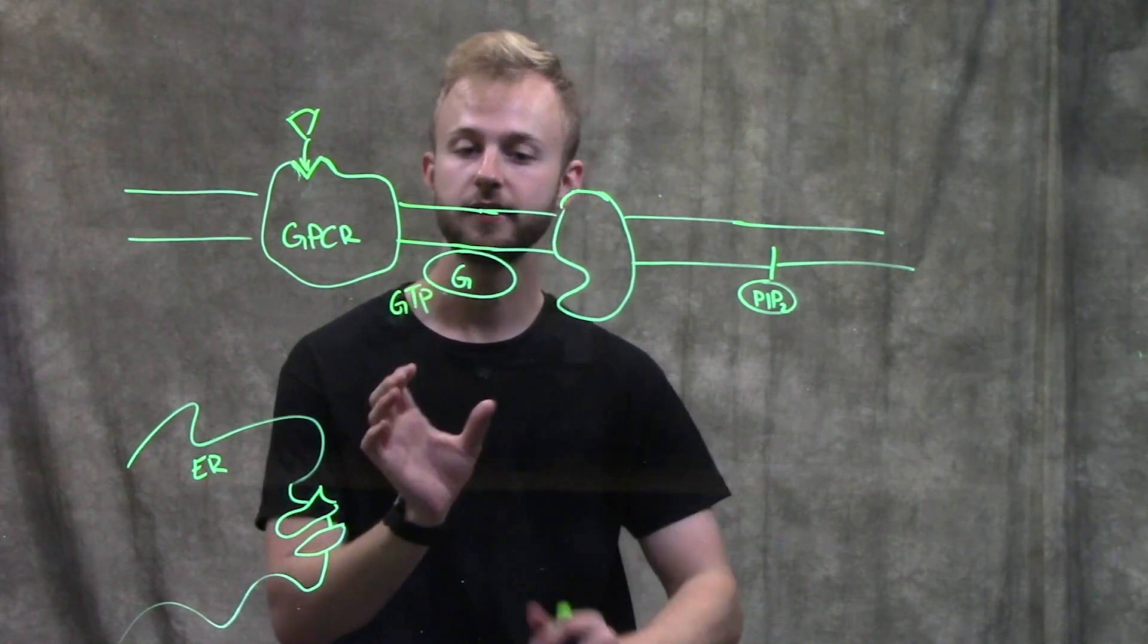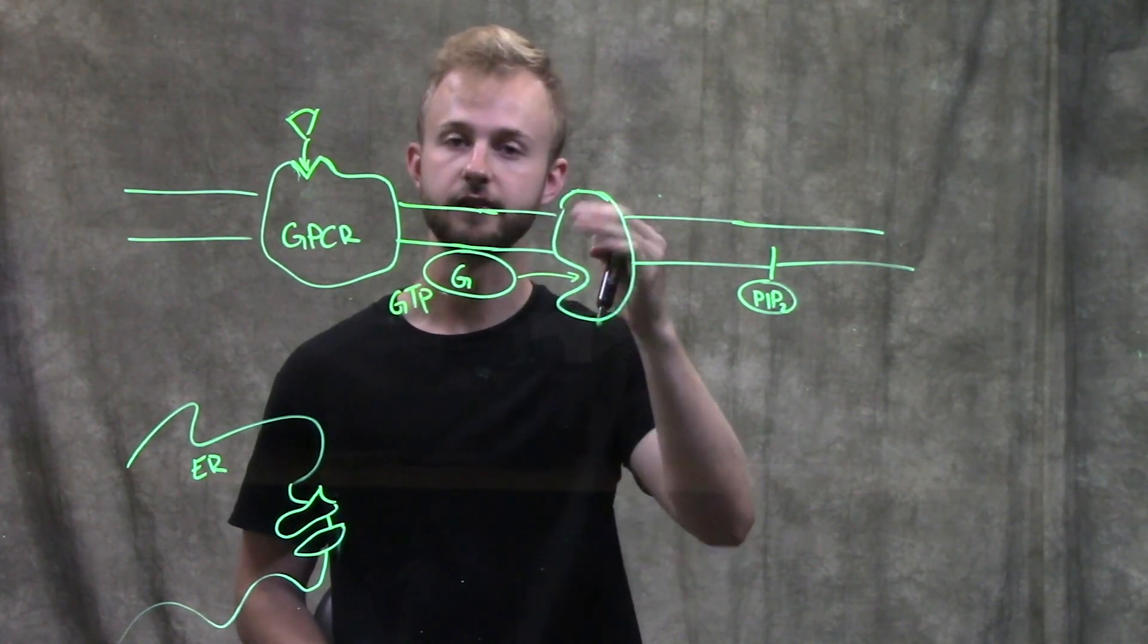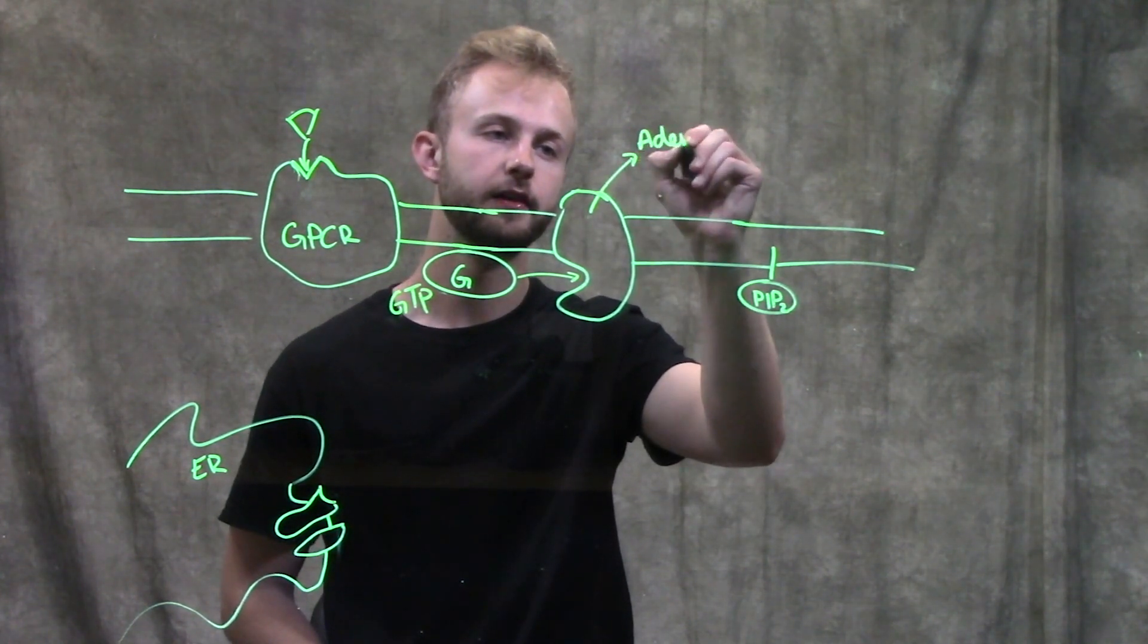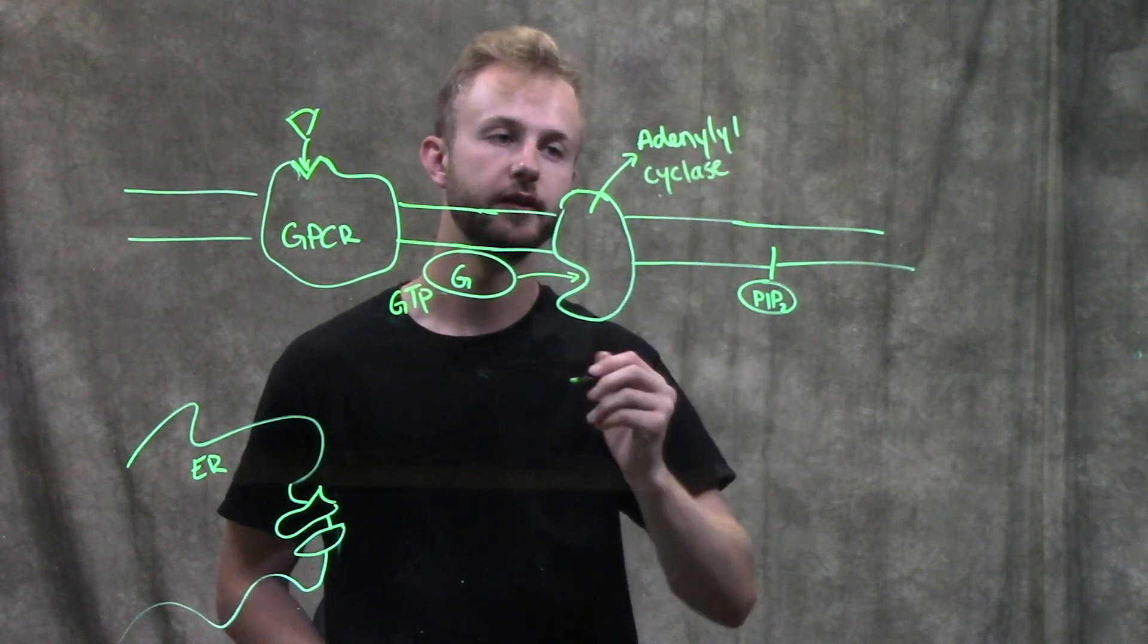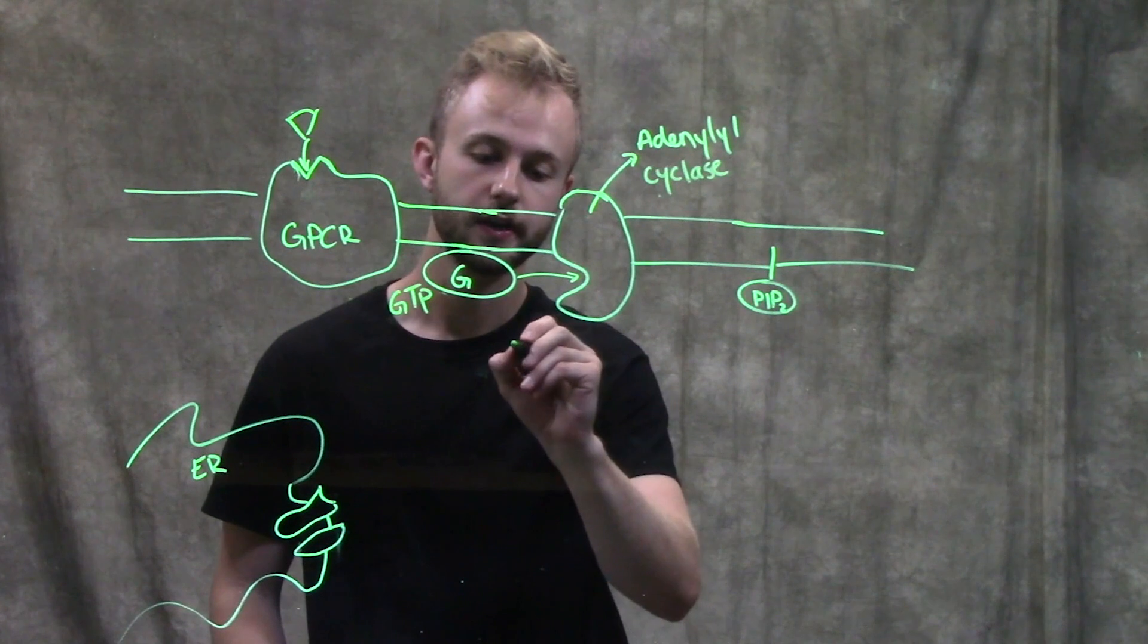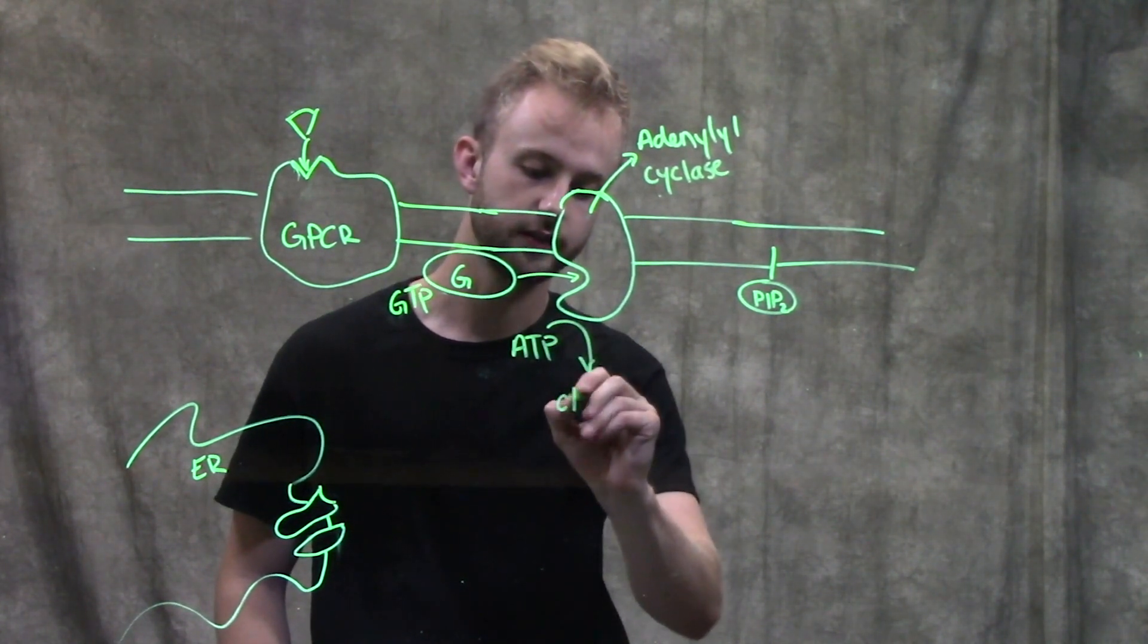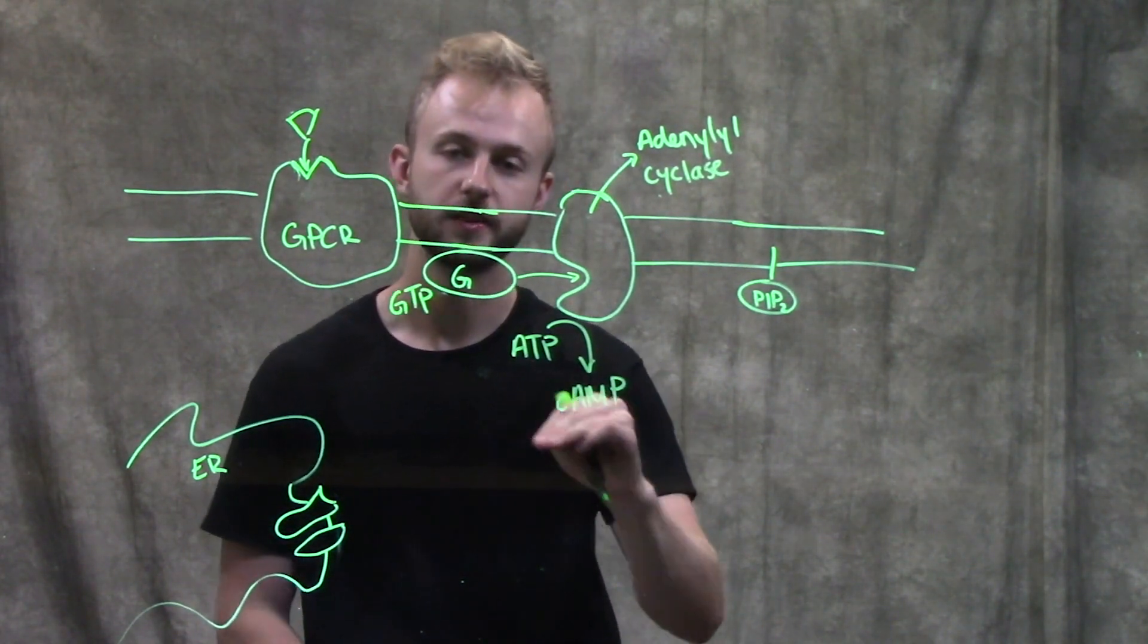Now this G protein is activated and it can diffuse across the inside of the membrane to activate this enzyme right here. So this enzyme is called adenylyl cyclase, and what adenylyl cyclase is going to do is it's going to convert ATP into cyclic AMP. And so this is our really important second messenger.